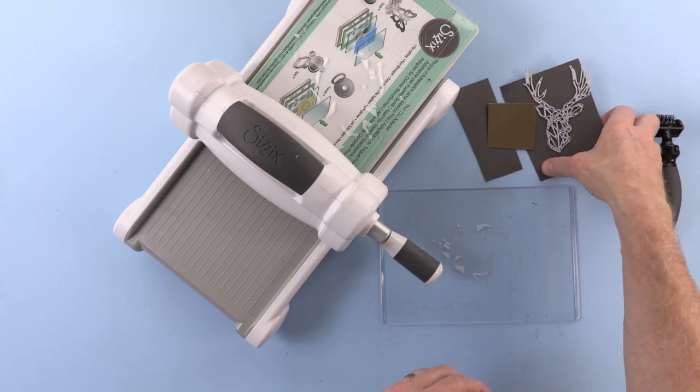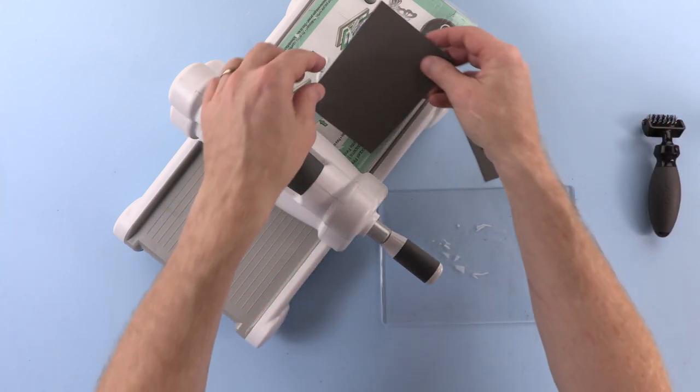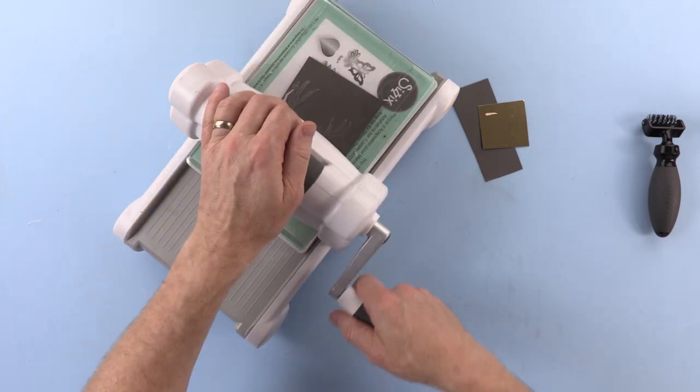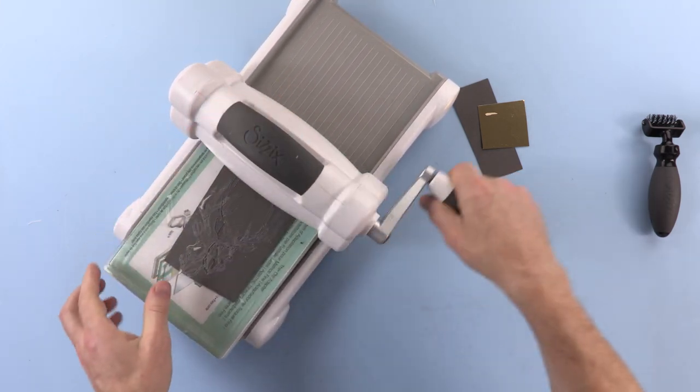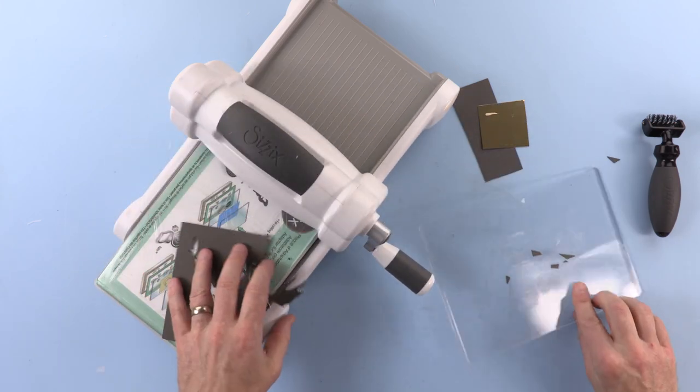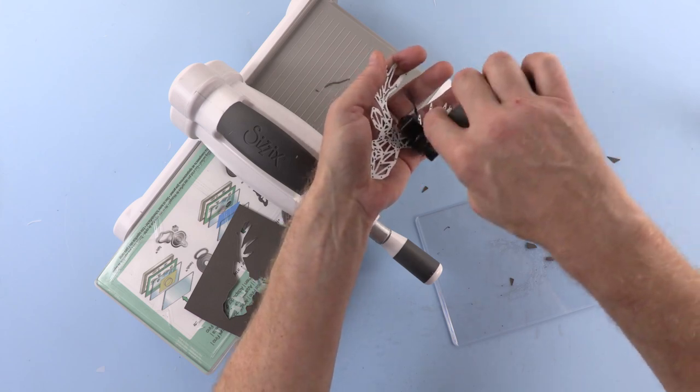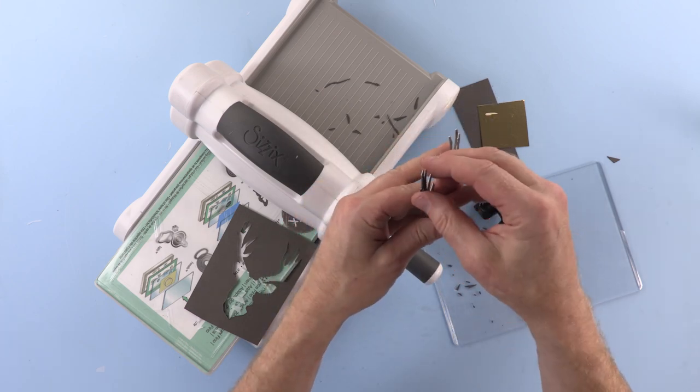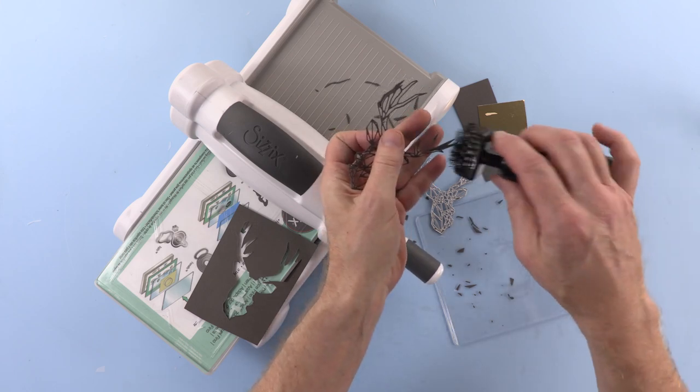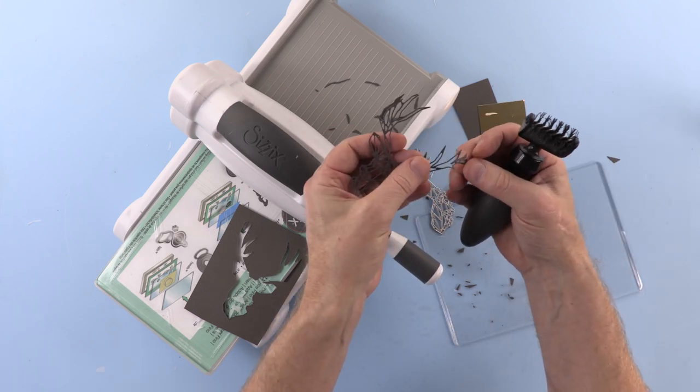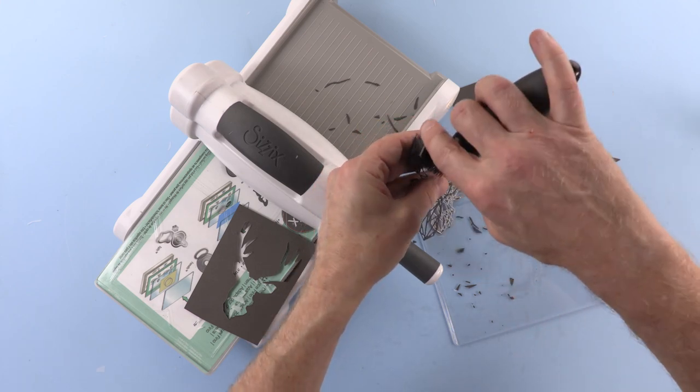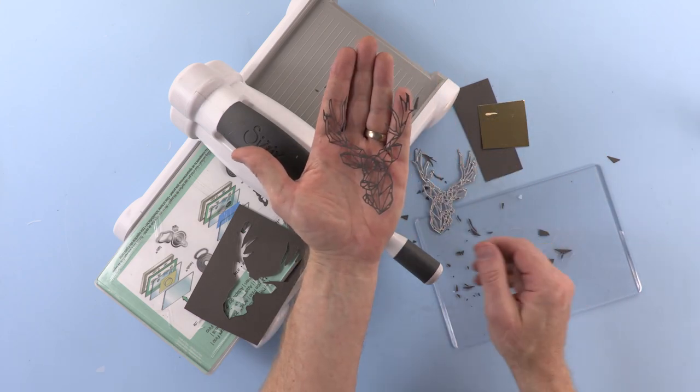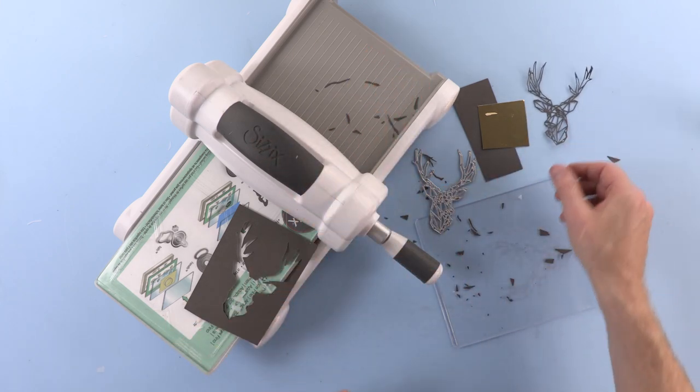Next up, I think we'll cut the actual stag head from some lovely dark grey-brown card. This is card from our cardstock pack. There are 80 sheets, four of each color. That's 20 colors in total. There's the die brush burning its keep. Give it a little tap and out it pops. You can see there are a few little stubborn bits which you can use your pokey tool or you can just pick them out by hand. There is the lovely detailed stag cut from card. We'll set that to one side.